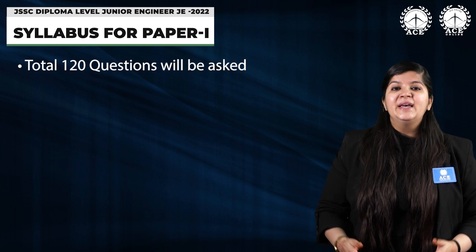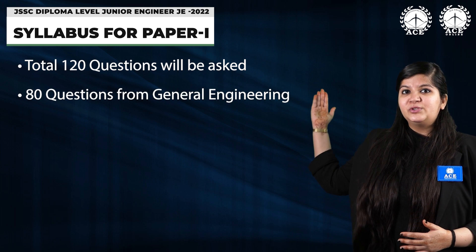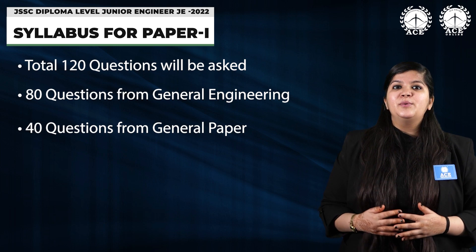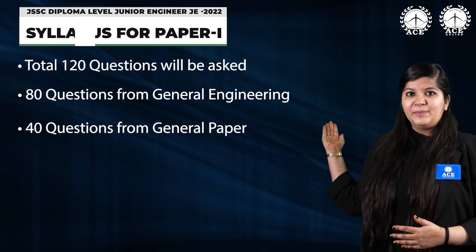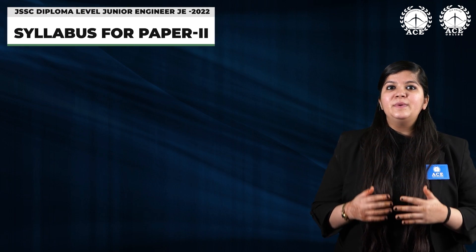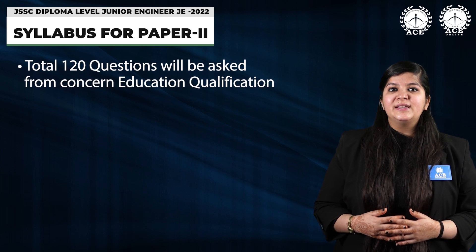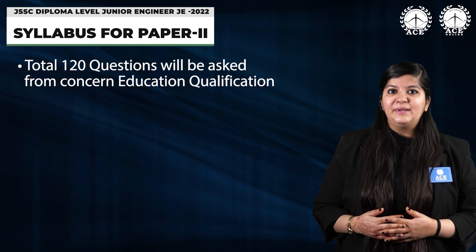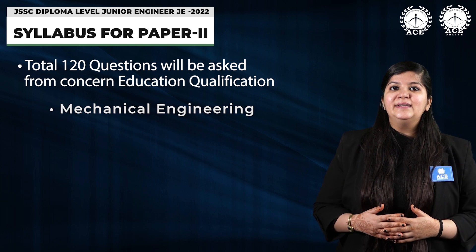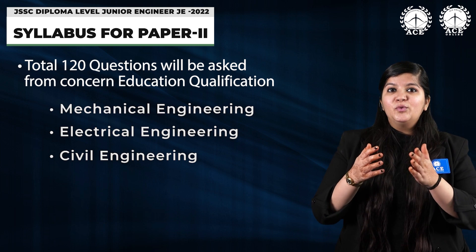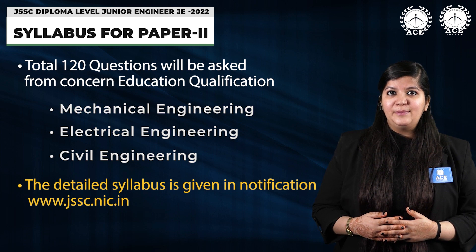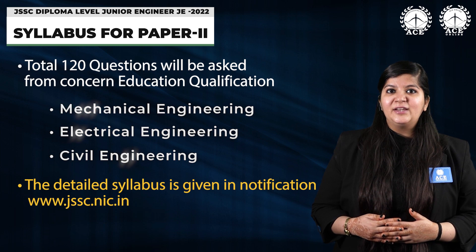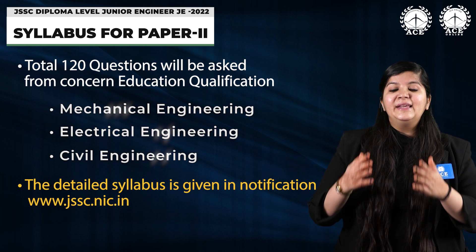Now let's look at the syllabus. For Paper 1, there will be 120 MCQ-type questions total: 80 questions from general engineering from the concerned discipline you are applying for, and 40 questions from a general paper. For Paper 2, all 120 questions are entirely based on the syllabus of the concerned discipline — Mechanical, Electrical, or Civil Engineering. To view the detailed syllabus for both papers, you can visit the official JSSC website; the link is given in the description box.